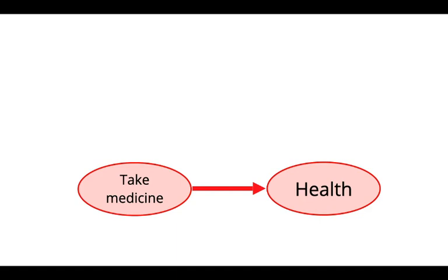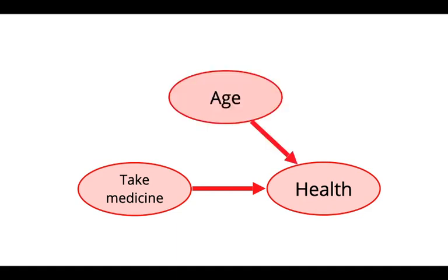Let's take a concrete example. We're interested in the medical effects of a particular medicine — we think taking this medicine will have a causal effect on your health. But we also know that age affects health, and age might affect whether you take the medicine or not. In a clinical trial over several months, if people forget to take their medicine, and older people are more likely to forget, this might introduce a confound.